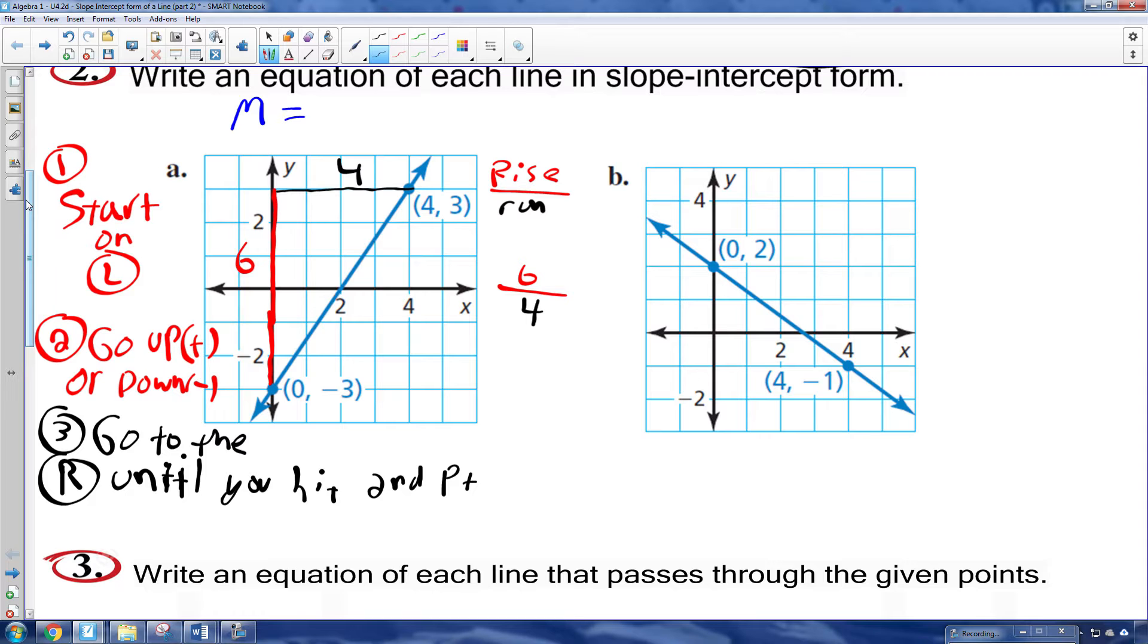So my slope is 6 over 4. And we can simplify that to 3 over 2. Because 6 divided by 2 is 3 and 4 divided by 2 is 2. And this is the most correct answer. 6 over 4, although technically correct, is not simplified. So it's not a full credit answer.